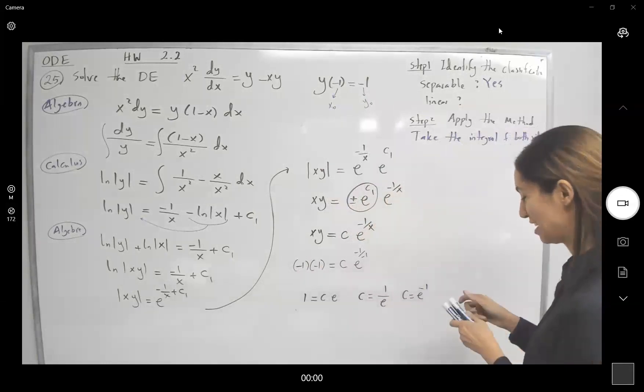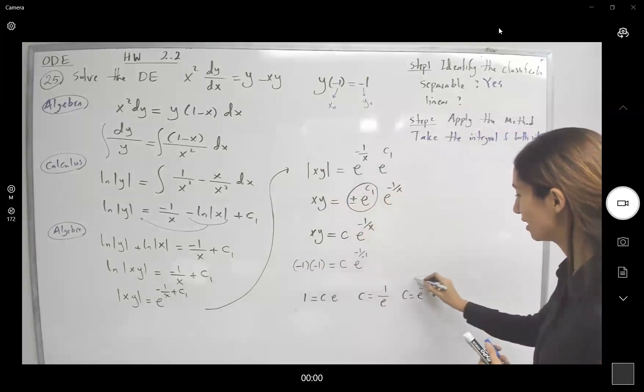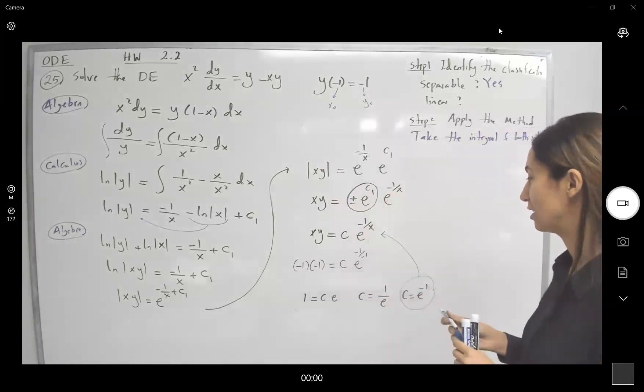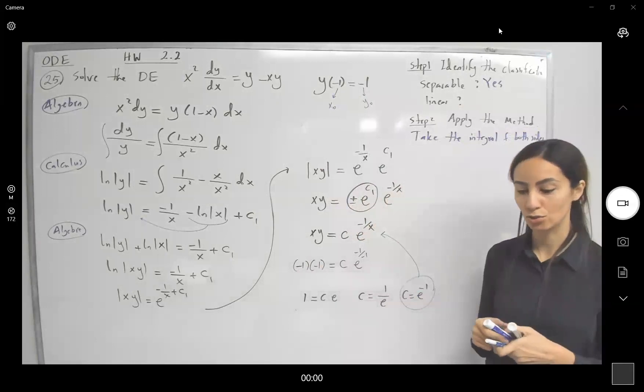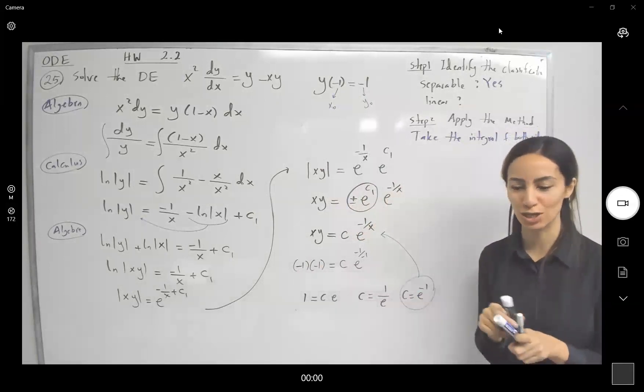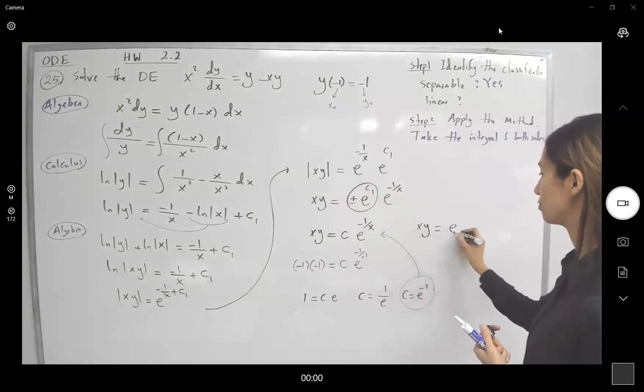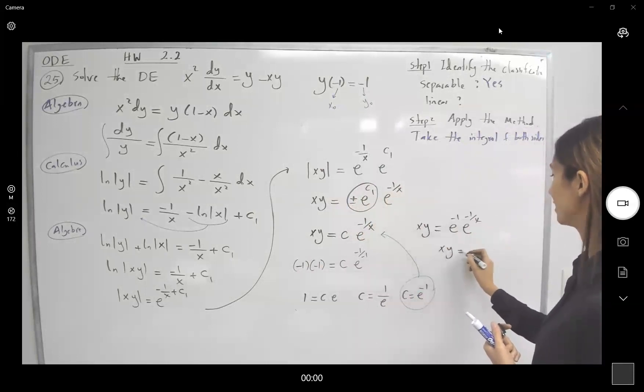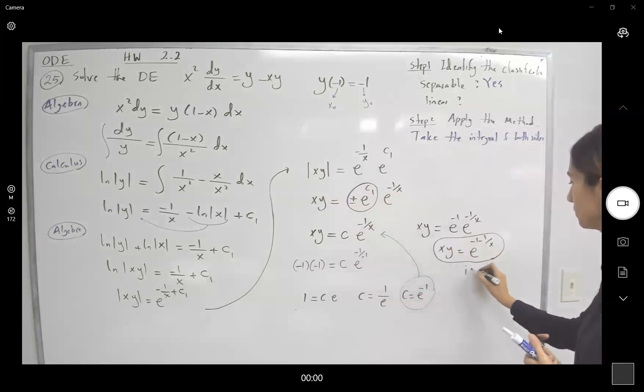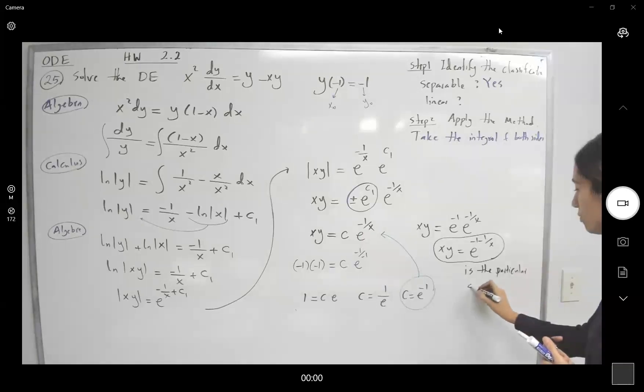Now that you have your constant, let us just plug that back into the family of solutions and find the particular solution. So xy becomes e to the negative 1 times e to the negative 1 over x, or xy is e to the negative 1 minus 1 over x, which is the particular solution of the differential equation.